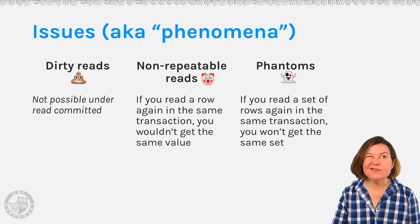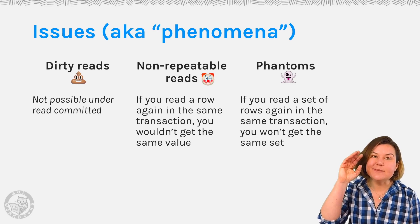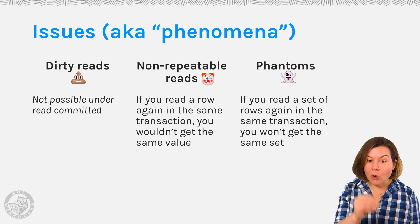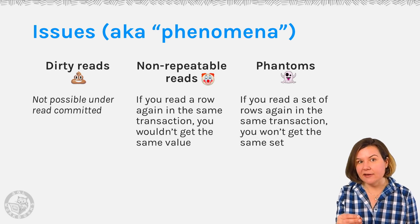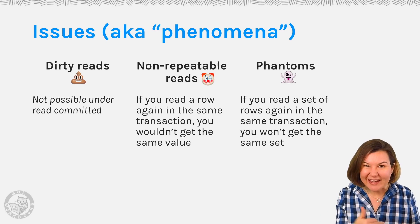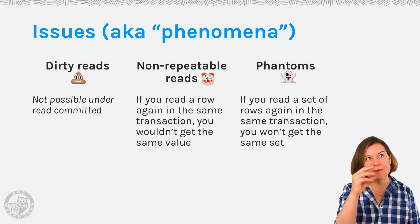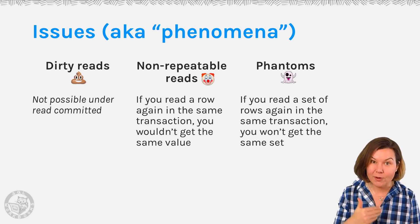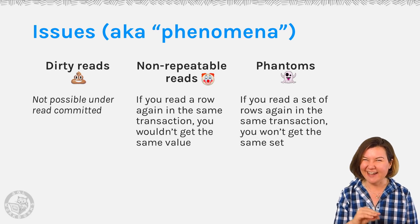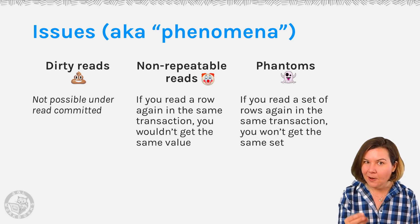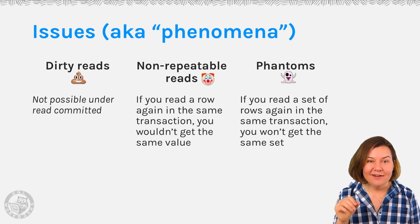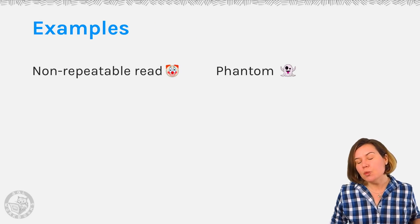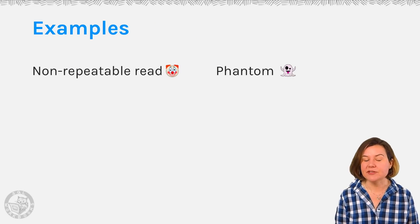Phantom reads are a little different. It means if I read the same set of rows again, I won't get the same set. Maybe there was a row inserted — so maybe there were three rows when I read the data first, and four rows when I read the data again. Nothing was updated, but a phantom row appeared.